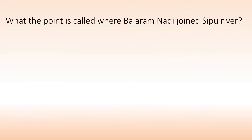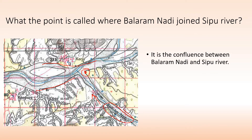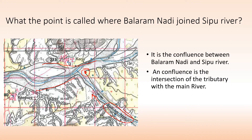What is the point called where Balram Nadi joins Sipu Nadi? We can see that Balram Nadi is the tributary joining the larger river, Sipu Nadi. This point is called confluence — the confluence between Balram Nadi and Sipu Nadi. Confluence is the intersection point of a tributary with the main river, where Balram Nadi joins Sipu Nadi.